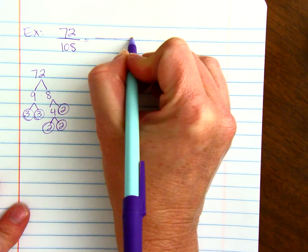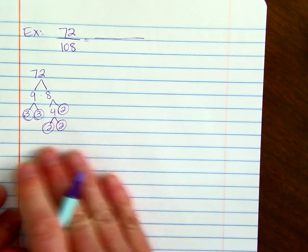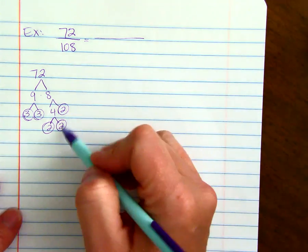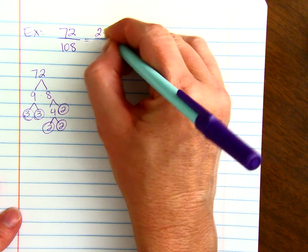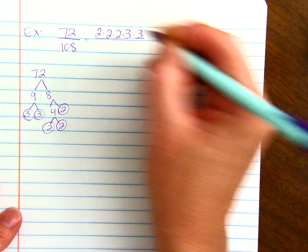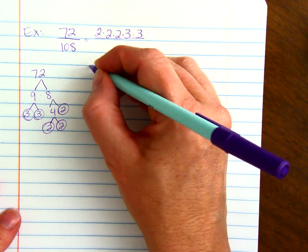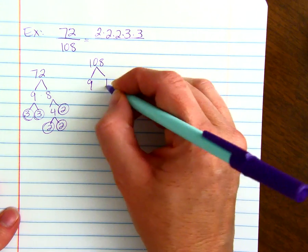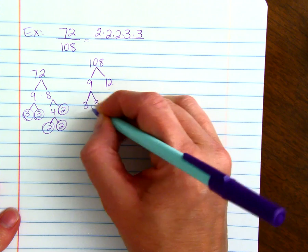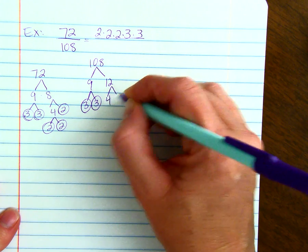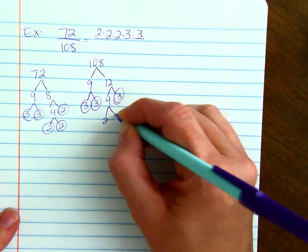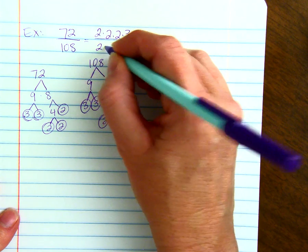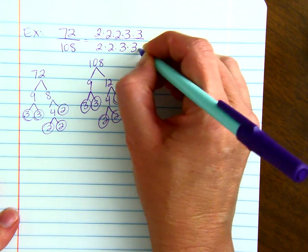We could rewrite 72 without using exponents. We'll just put all the prime factors. And then we would do the same thing with 108, which is 9 times 12, 9 is 3 and 3, 12 is 4 and 3, 4 is 2 and 2. So we'd have 2 times 2 times 3 times 3 times 3.